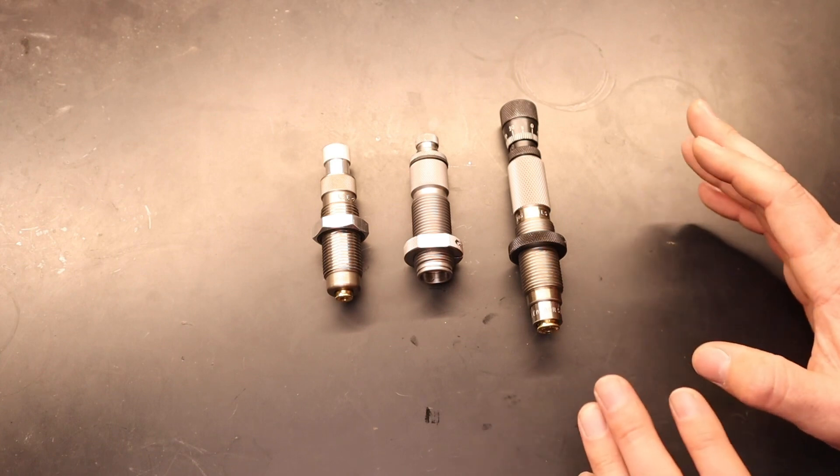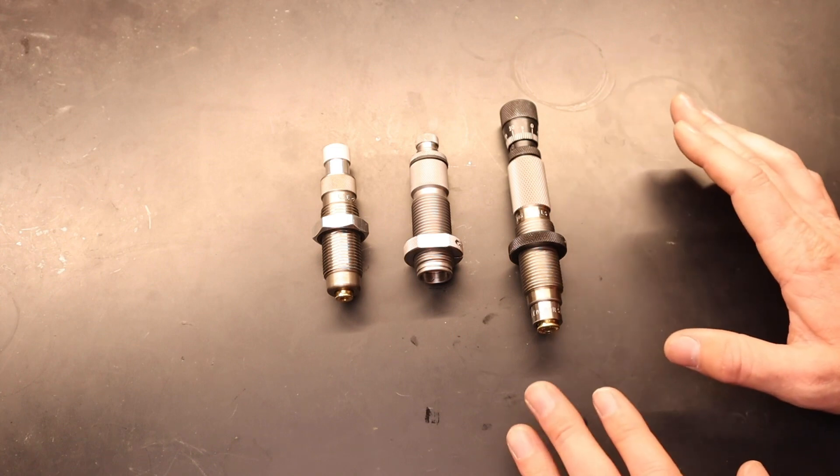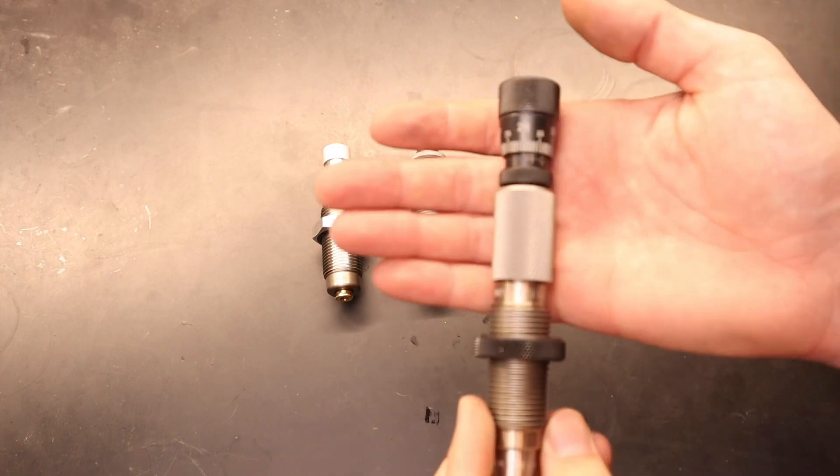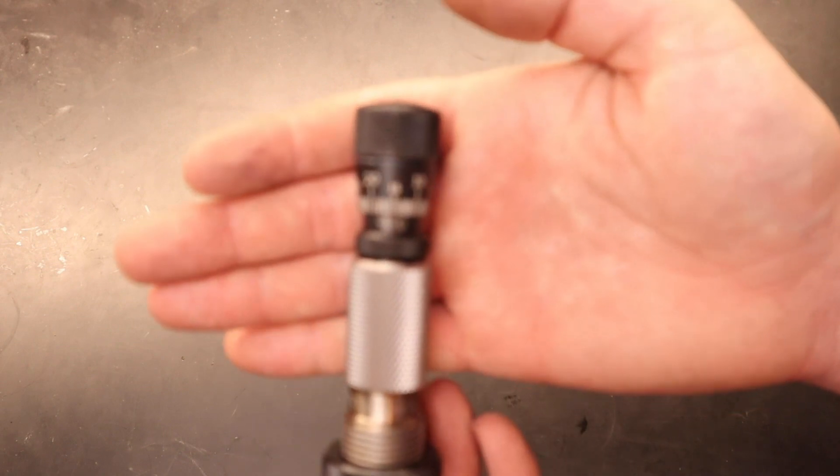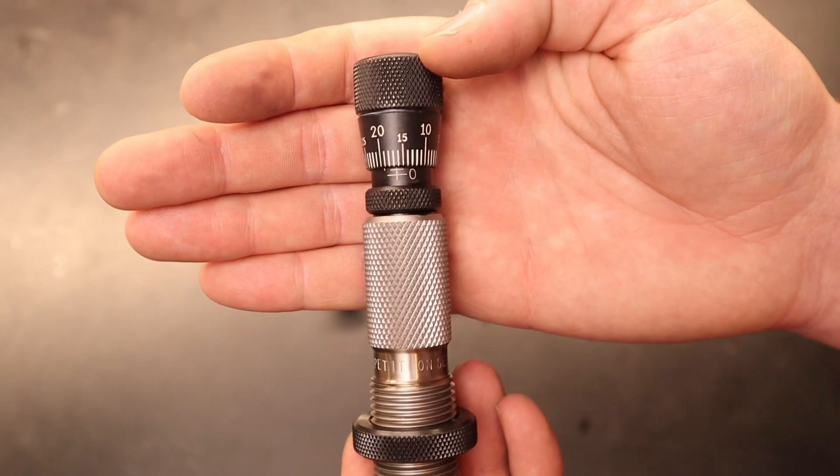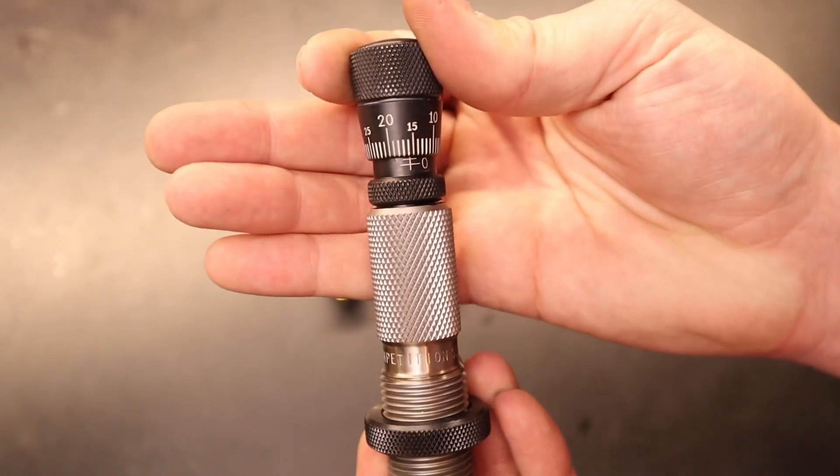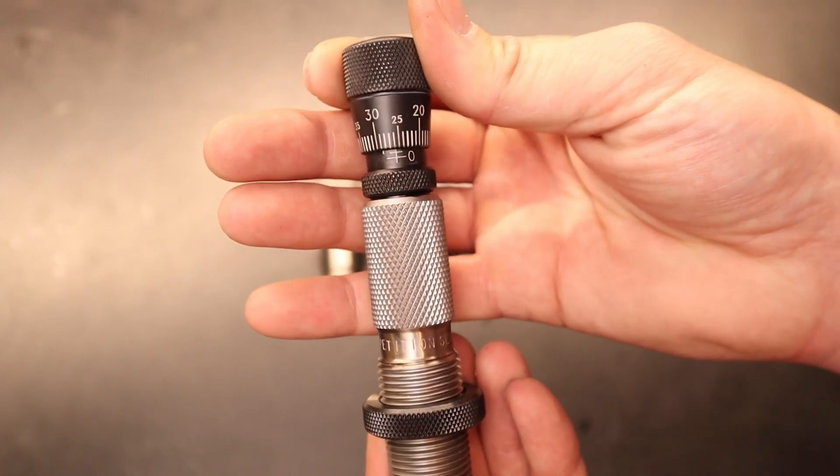Unfortunately, they come with a higher cost, and they are also a little more complex of a seating die itself. So let's start with the top. Up top, we have a micrometer where you can actually see and read exactly what kind of adjustments you're making to the overall length of your bullet, which is a very good thing. If you are reloading a bullet for the first time,